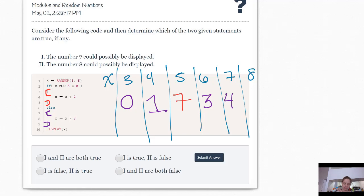And then we have 8. Is 8 divided by 5 have a remainder of 0? No, it has a remainder of 3. So we're going to say X is set to X minus 3, which is 5.